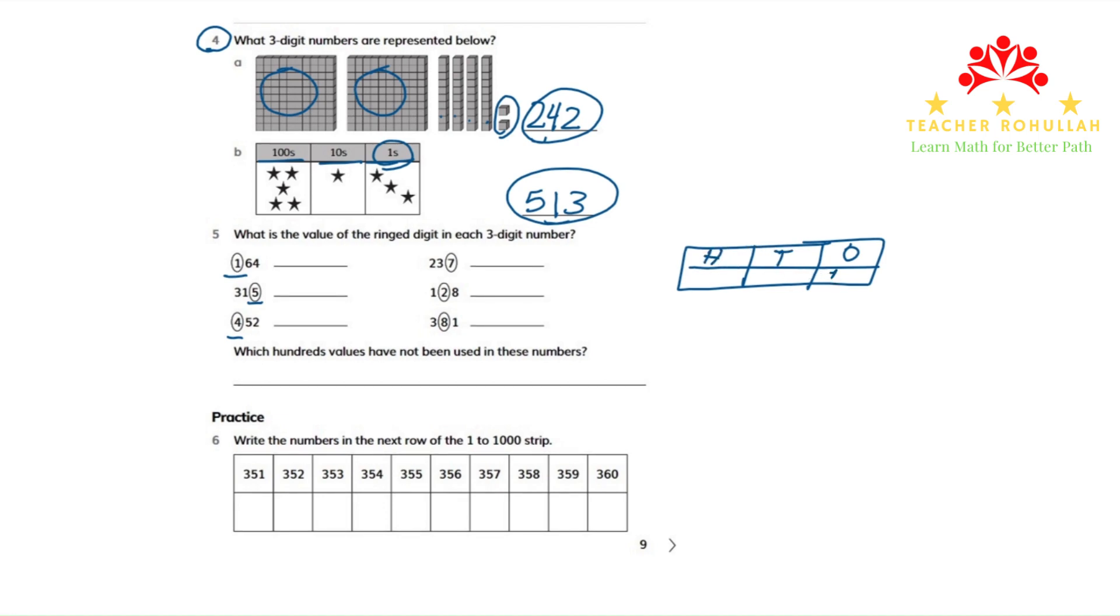The value in the 1s place is 1. The value in the 10s place is 10. And the value in the 100s place is 100. Any digit that's put in the 100s place is multiplied by 100. Any digit in the 10s place is multiplied by 10. And any digit in the 1s place will be multiplied by 1.